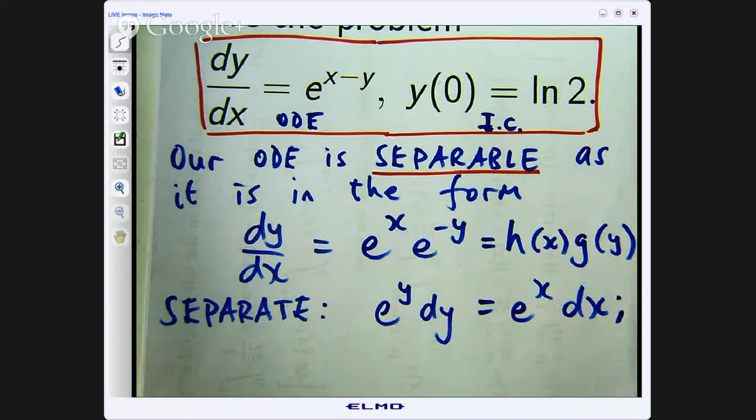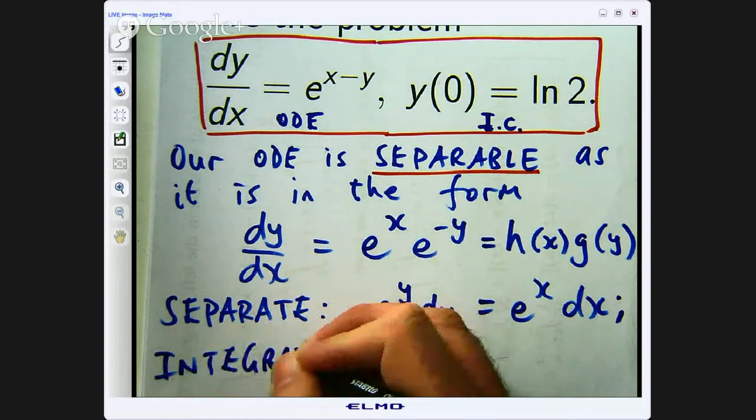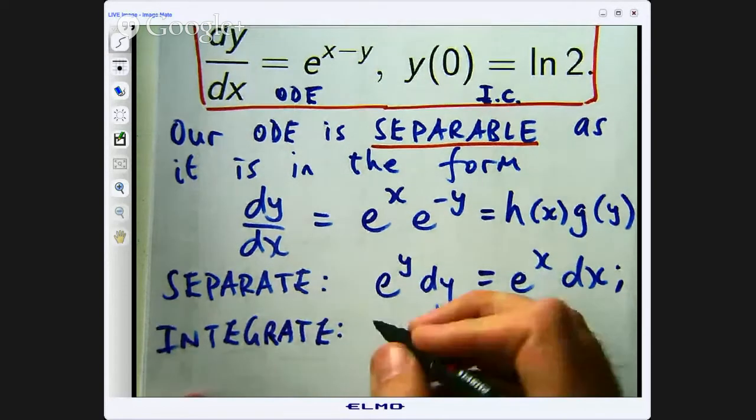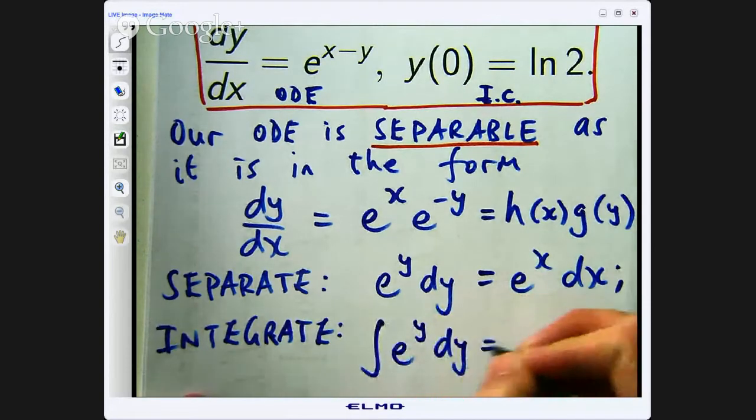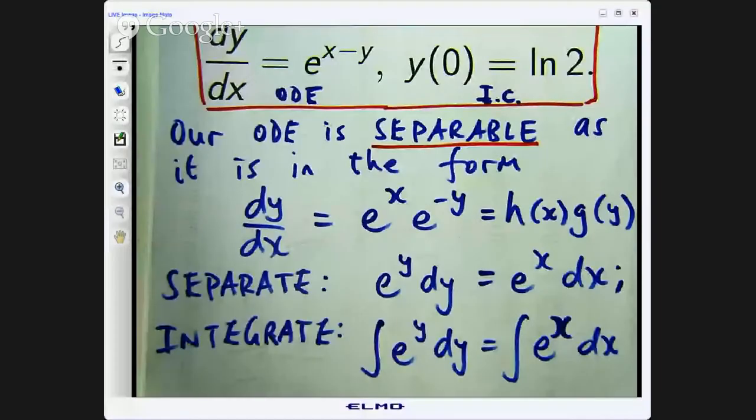The second step in this problem is to integrate both sides. So you put an integral sign here, integral sign here and then you want to simplify. So we have separated the variables. We now integrate both sides of the equation and then what we want to do is try to get some sort of form for the unknown function y.